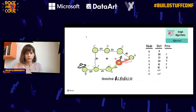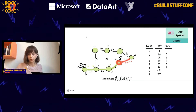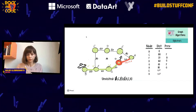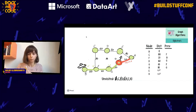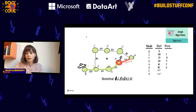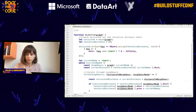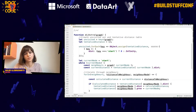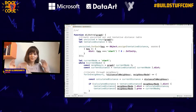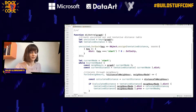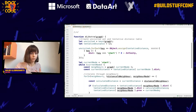Depending on what result you want — just from node A to node B, or a whole tree of shortest paths from your starting point — you can stop early or continue through all reachable nodes. I wanted to implement this together with you, but I realized it might take a while. So I'll go through a very simple implementation I did.